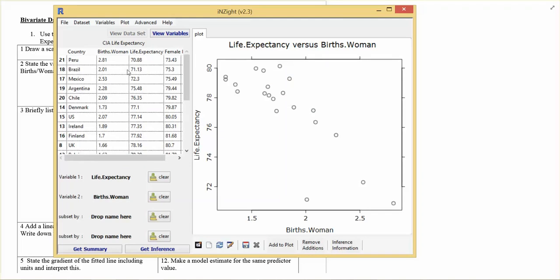And so I'd be interested in finding out a bit more about what's unique about Brazil and why it wouldn't fit the relationship in the other points. Another interesting thing here of course is that these other two points with low life expectancy, what are they? Well they're Peru and Mexico.